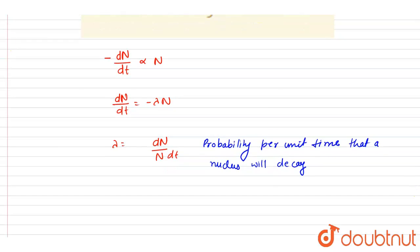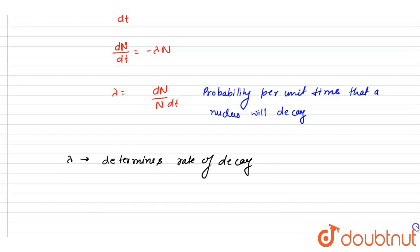If the decay constant will be more, the probability of decaying per unit time will be more. So it determines rate of decay, and you can also write down decay constant is the ln2 by half-life.